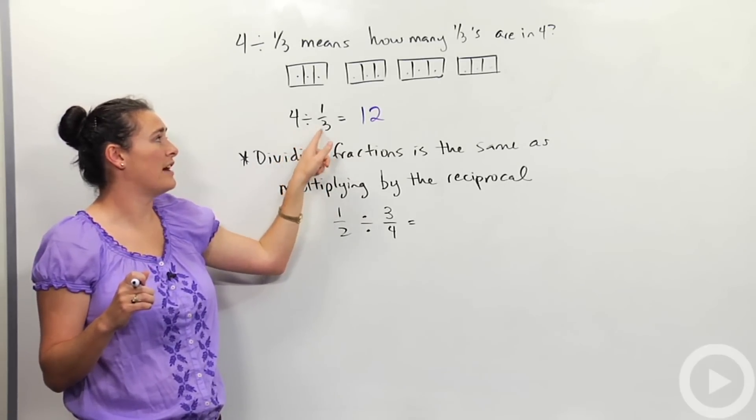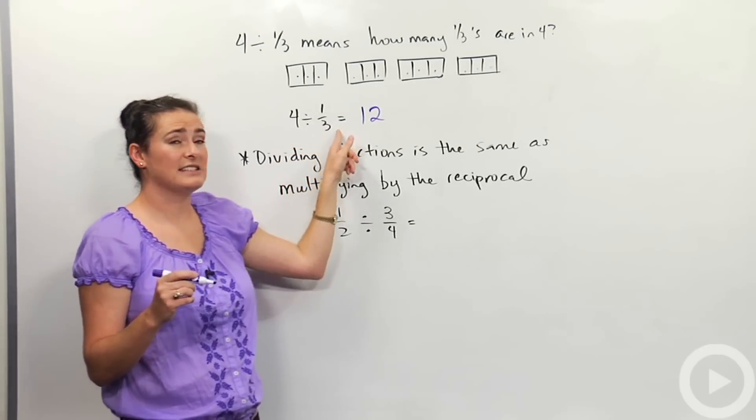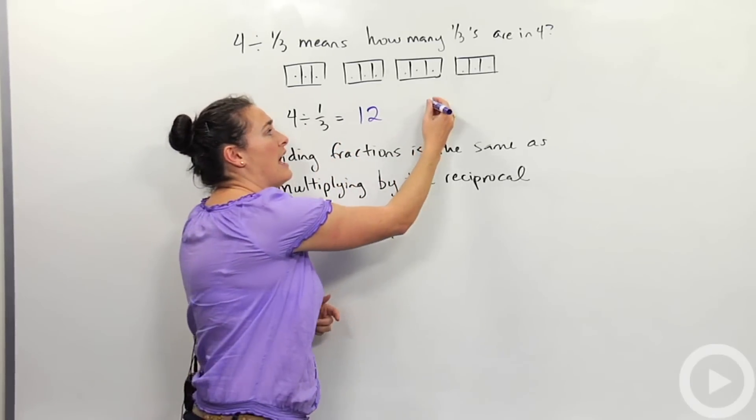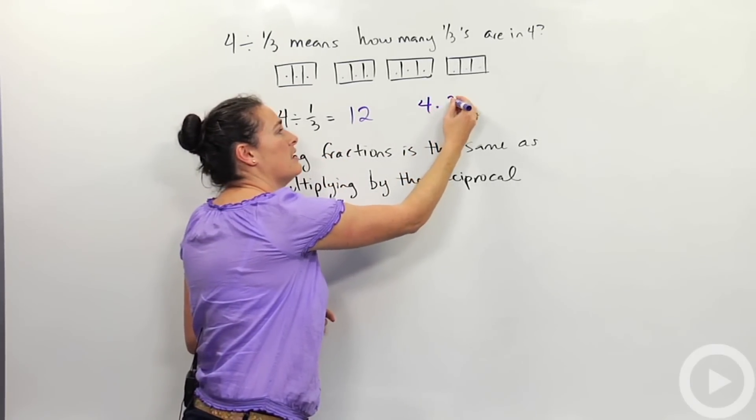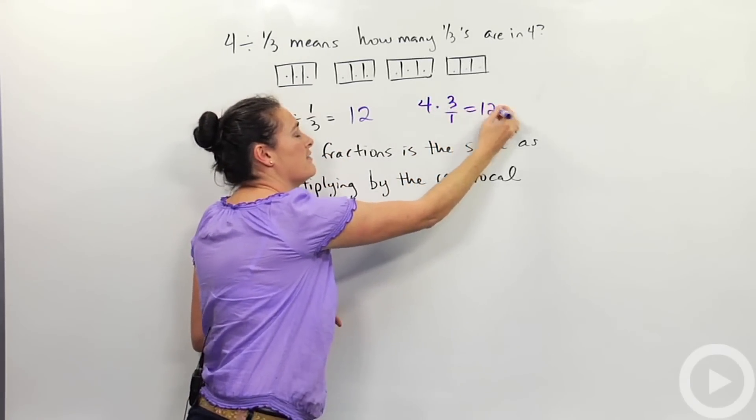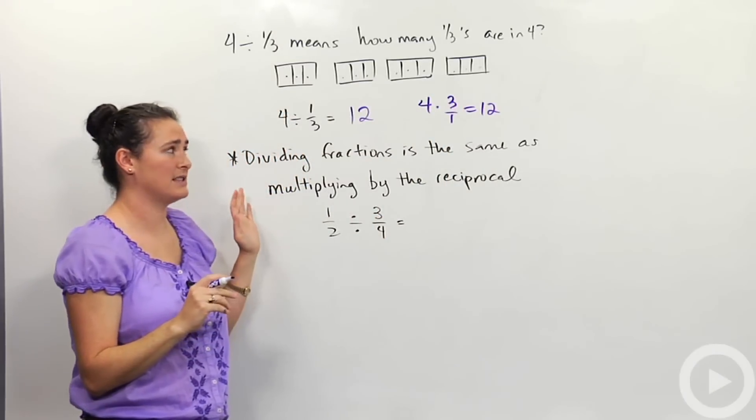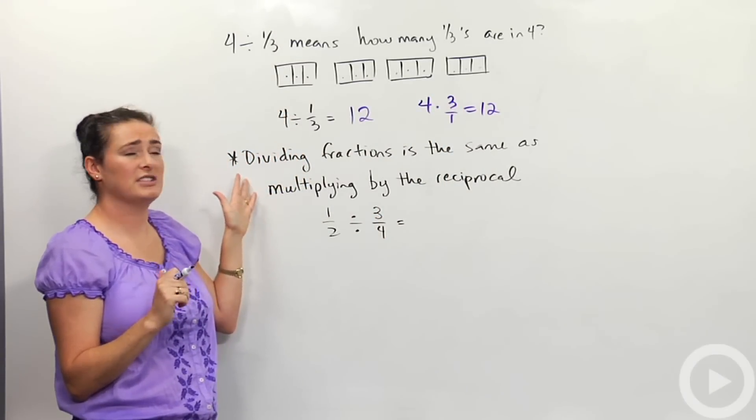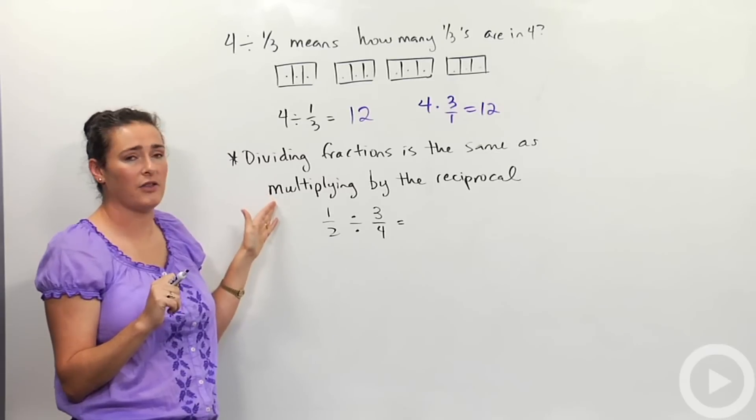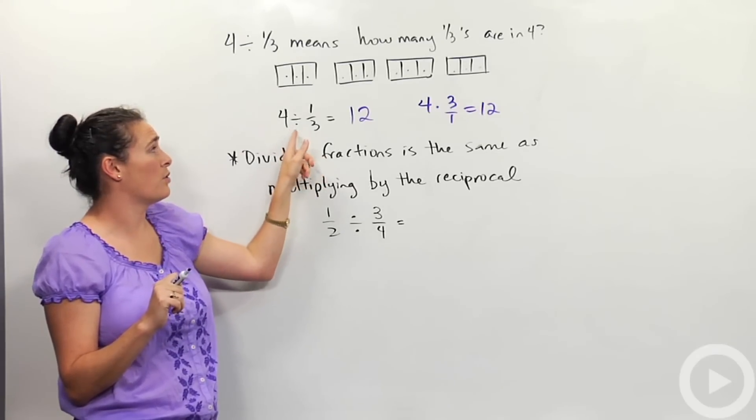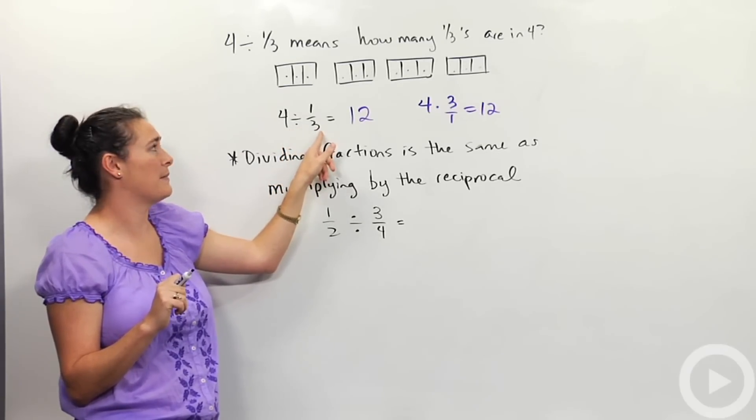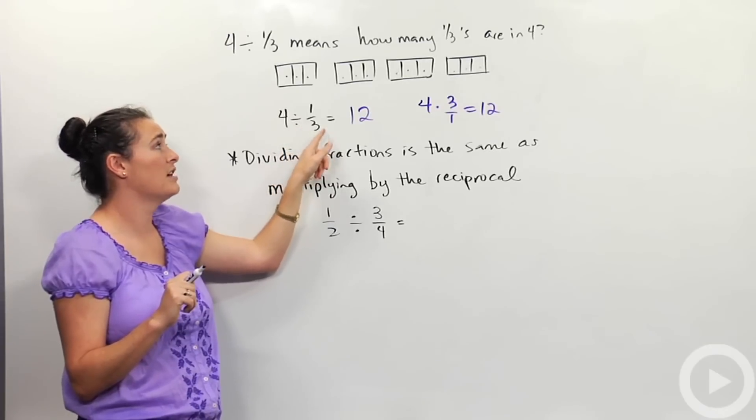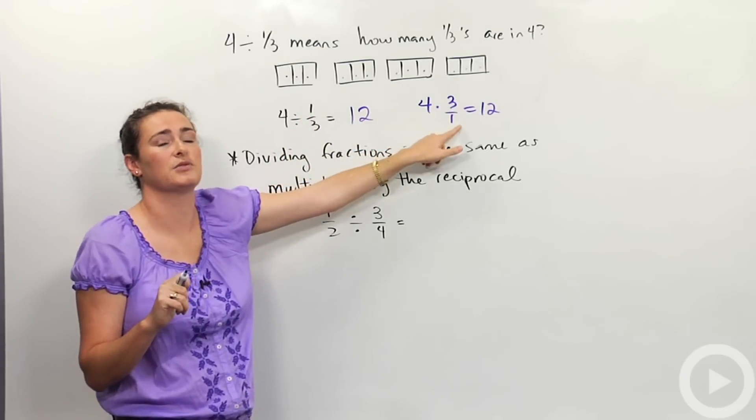Another way I could write this four divided by one-third is as follows. I could write that as four times three over one to give me the twelve. And that's this rule that's here. This is the way we can remember how to divide fractions. Dividing fractions is the same as multiplying by the reciprocal. So four divided by one-third, that was the same thing as four times the reciprocal, four times three over one.